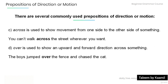'Across' is used to show movement from one side to the other side of something. For example: 'You can't walk across the street whenever you want,' meaning you can't walk from one side of the street to the other side of the street.